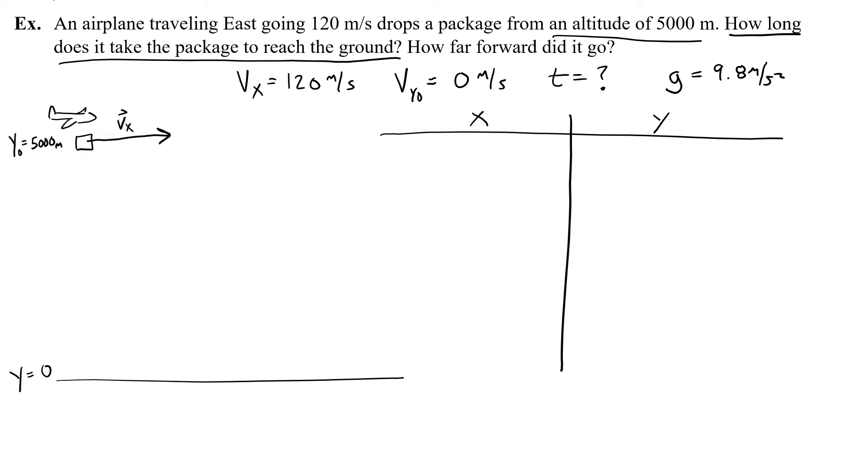So for x, I have 120 meters a second. And for y, I've got the initial vy0, 0. The initial height is 5,000. Final is 0, g is 9.8. And I want to find t. Now, t is something that actually goes in both sides because time has a shared parameter between the x and the y motion.